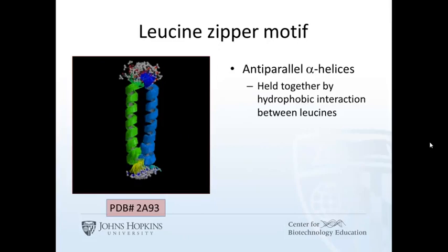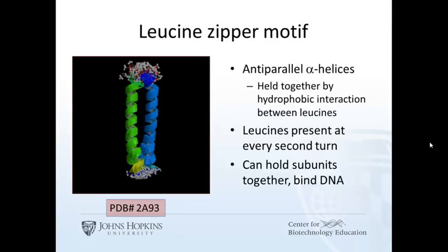The leucine zipper is found in some DNA binding proteins. The helices are held together by leucine at every other turn of the helix. Since there are close to 3.5 amino acids per turn, there are about seven amino acids in two turns of an alpha helix. In this structure, leucine occurs every seventh amino acid. Leucine is sticky and often interacts with other leucines, allowing these two helices to be held together in a zipper-like manner. So if leucine is every seventh amino acid, the pattern is easy to describe: L, followed by any six amino acids, followed by L, followed by any six amino acids, followed by L.